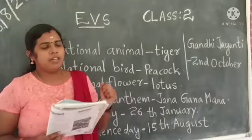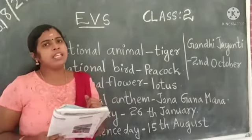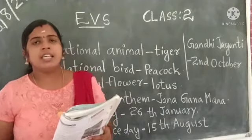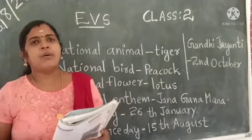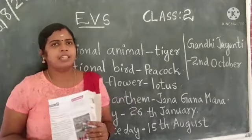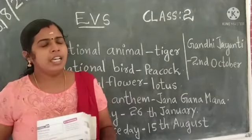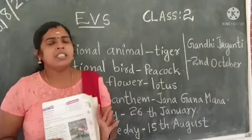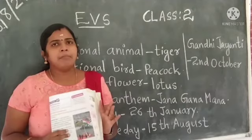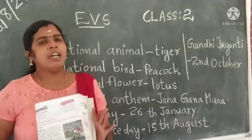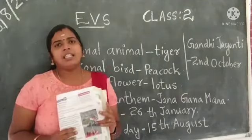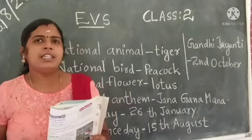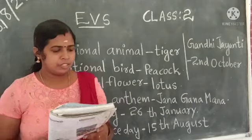The first national symbol is our national flag. Our national flag has three colours, so it is called the tri-colour flag. The upper band is saffron, the middle band is white with the Ashoka Chakra, and the lower band is green.